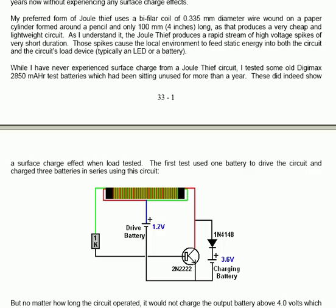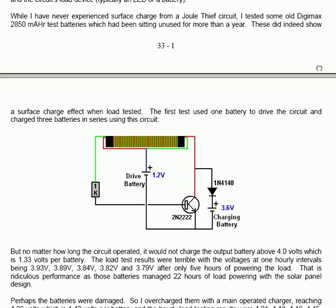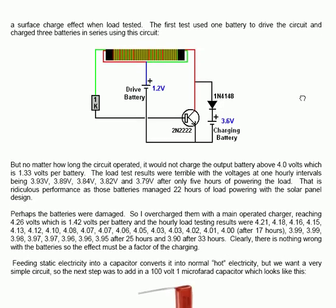While I've never experienced surface charge from a Joule Thief circuit, I tested some old Digimax 2850mAh test batteries which had been sitting unused for more than a year. These did indeed show a surface charge effect when load tested. The first test used one battery to drive the circuit and charged three batteries in series using this circuit. Very simple Joule Thief, bifilar coil connected to the battery plus and through a 1K resistor to the base of the transistor. And then the output voltage spikes taken from the collector of the transistor fed through a 1N4148 diode, which is very fast indeed in operation, feeding directly into the charging battery.